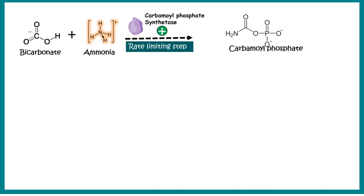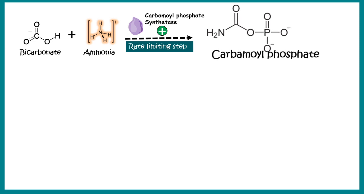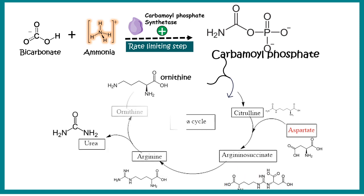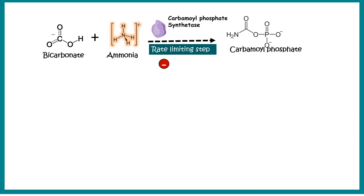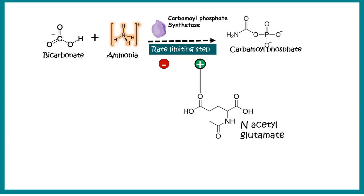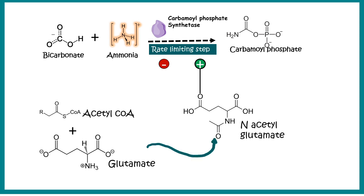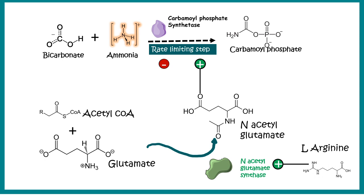N-acetyl glutamate (NAG) is a positive allosteric modulator of carbamoyl phosphate synthetase 1 (CPS1), positively regulating the forward reaction. NAG is generated from glutamate and acetyl-CoA by the enzyme N-acetyl glutamate synthase. Importantly, N-acetyl glutamate synthase is itself regulated by L-arginine — so when more arginine is present, more NAG is produced, resulting in positive modulation of CPS1 and increased urea cycle flux.